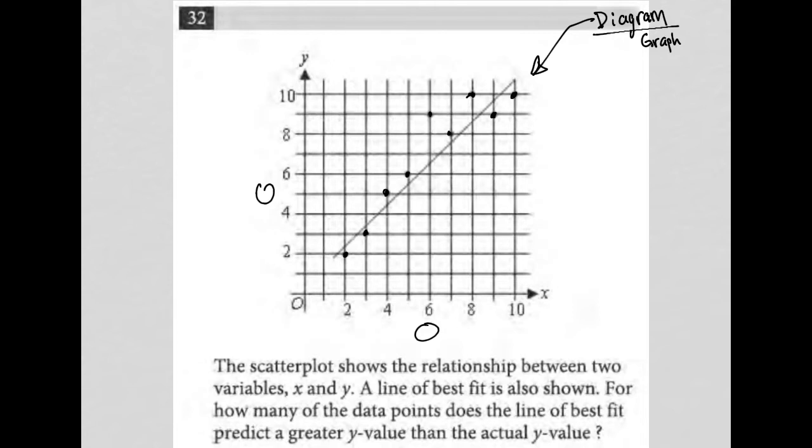The line isn't going through the points, so whenever you see that, that's typically called a line of best fit. It just gives you the trend and direction overall of the data points, but it's not actually representative of connecting all those dots.